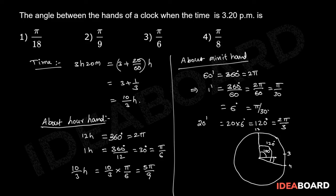The angle between the hour hand and minute hand at the time of 3 hours 20 minutes is 20 degrees. Therefore the required angle equals 120 degrees minus 100 degrees, that equals 20 degrees, equal to pi by 9 radians. So the correct answer is the second option.